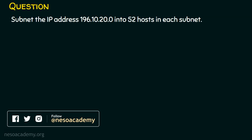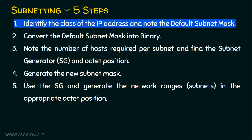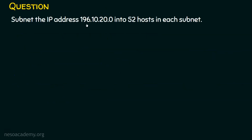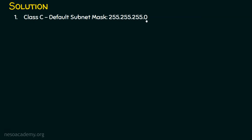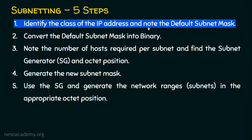Step number one is to identify the class of the IP address and note the default subnet mask. In the question, the first octet is 196. If the first octet is between 192 and 223, it is class C. So this is a class C IP address, and hence the default subnet mask is 255.255.255.0. Step one is done.